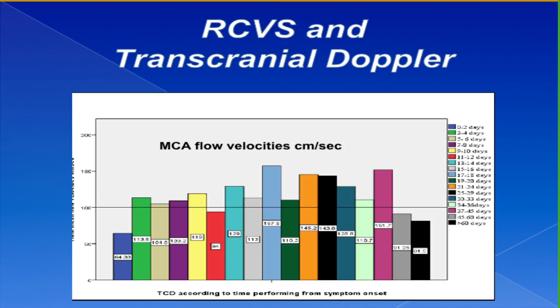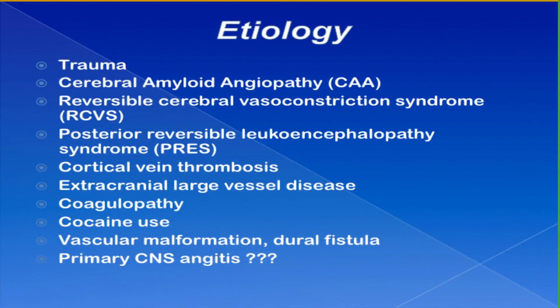Of note, a number of patients with reversible vasoconstrictive syndrome will have a normal vascular study in the beginning, and the vasculopathy only gets picked up a few days after presentation — perhaps into the second week of symptoms. The feeling is that this condition starts distally in small vessels and moves proximally to the larger vessels at the base of the brain. In the past, many of these patients were diagnosed as primary CNS vasculitis, treated with steroids, and when follow-up imaging normalized it was taken as proof of a vasculitic disorder — but these patients were probably just getting better on their own.